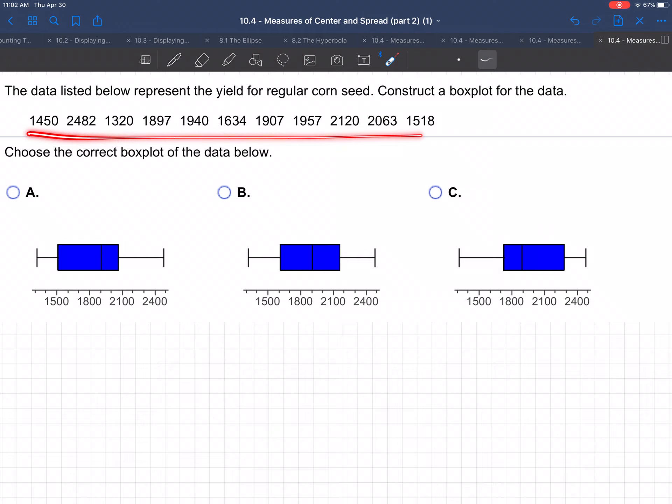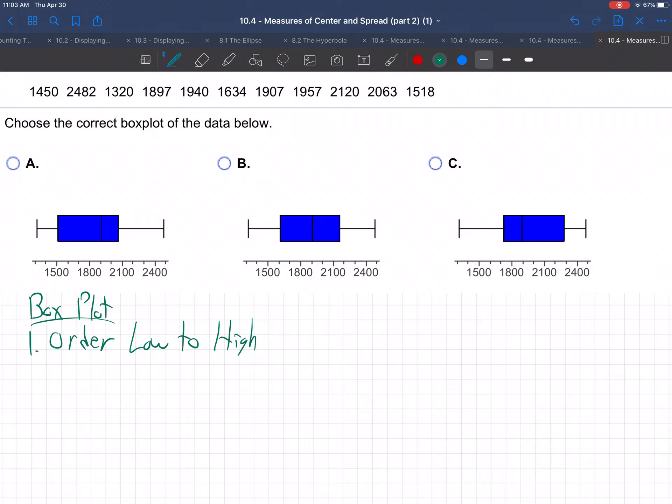Okay, so here's a bunch of numbers. They want a box plot. How do we make a box plot? Well, the first step is to order the numbers low to high. So we've got to take these numbers and put them in order from low to high.